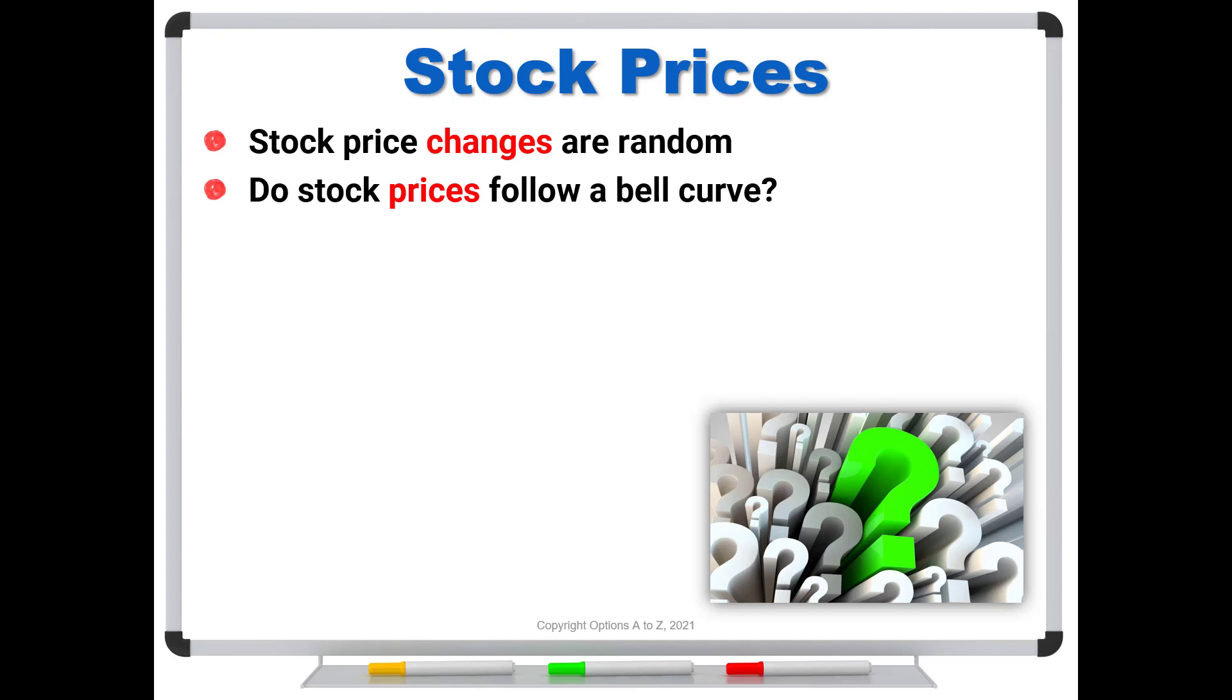And what that means when we talk about the change, this is the day-to-day changes. So when you hear things like the Dow was up 200 points or down 650 points, those are changes. Or IBM was up a dollar or down 70 cents. Those are stock price changes. And if you were to plot those, if you were to write them down on a piece of paper every single day, plus a dollar, down 70 cents, up 32 cents, and so on, and you were to put a histogram and plot them, you would get a bell curve.